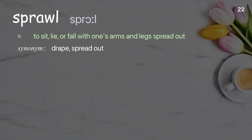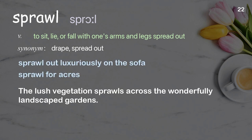Sprawl: to sit, lie, or fall with one's arms and legs spread out. Examples: sprawl out luxuriously on the sofa; sprawl for acres; the lush vegetation sprawls across the wonderfully landscaped gardens.